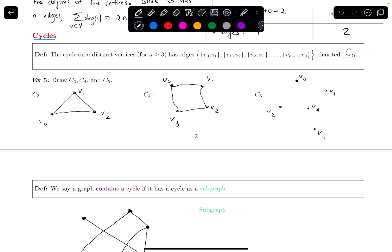So V0 connects to V1, V1 connects to V2, maybe it's a curvy edge, and V2 connects to V3. That one connects to V4, and then that one connects back to V0. And that's a cycle.